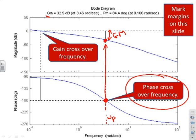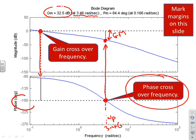In this example the gain margin is 32.5 decibels — that's a positive gain margin — at a phase crossover frequency of 3.46 radians per second. For the phase margin, find the gain crossover frequency where the gain plot crosses 0 decibels, then look at what phase we have at that frequency. The phase is above minus 180, confirming a positive phase margin. The distance above minus 180 degrees is the phase margin. This region is quadrant 3, between minus 90 and minus 180 degrees — exactly where we expect to read it.